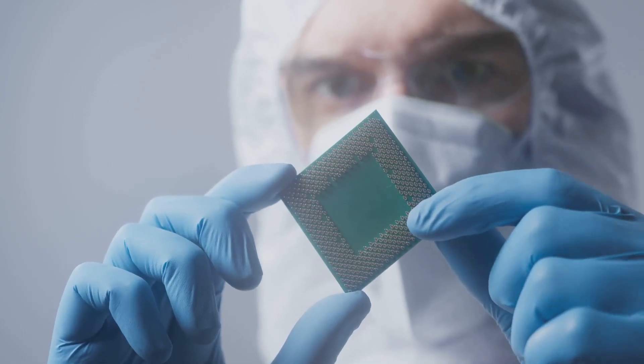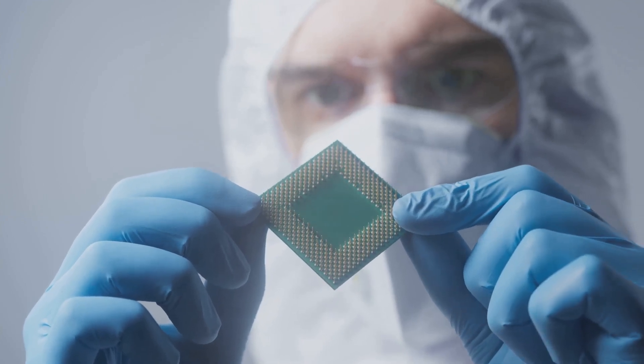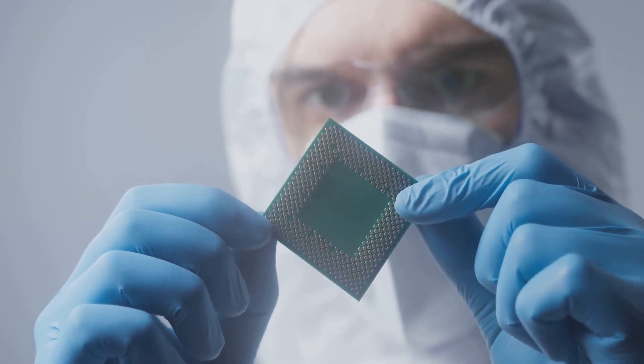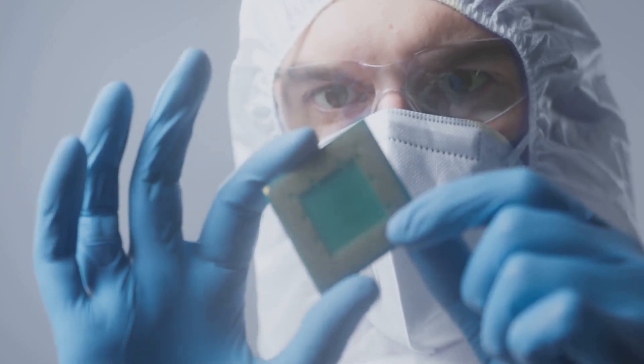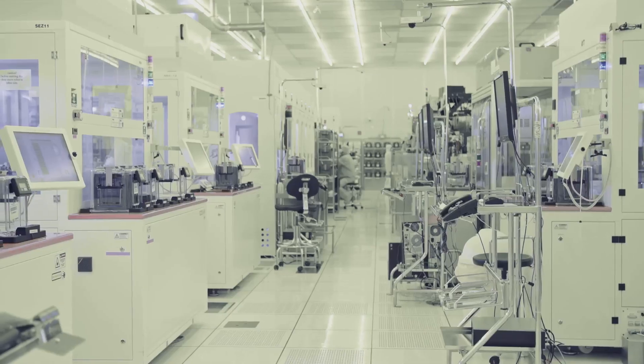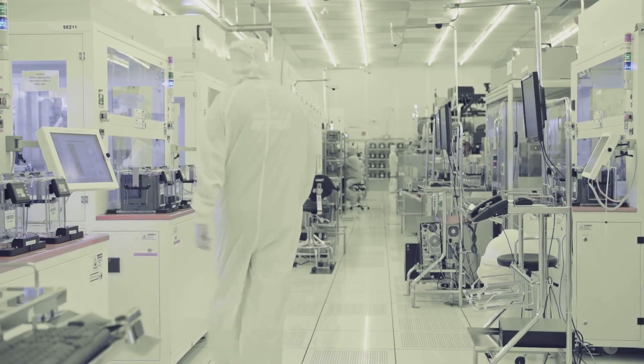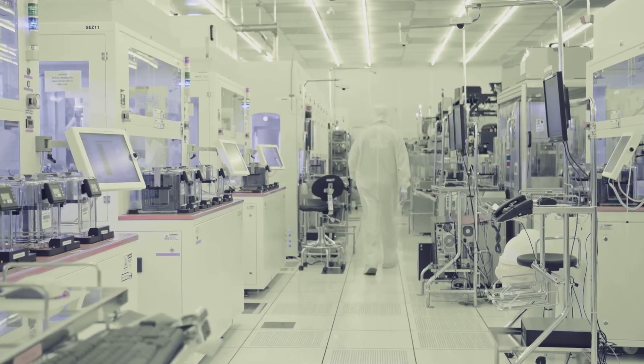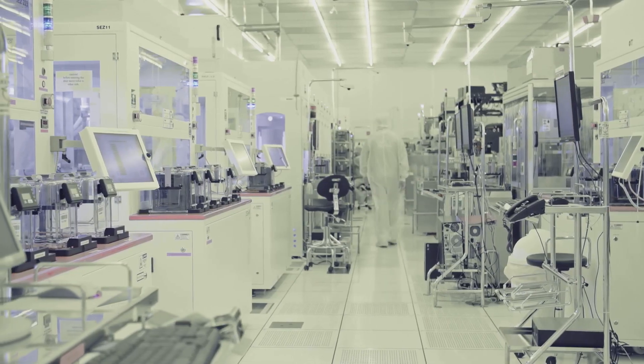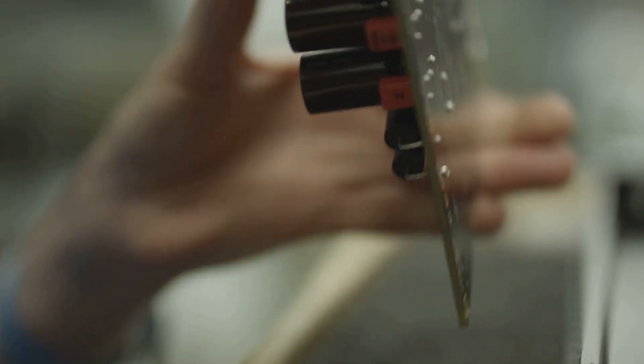They depend on tiny chips called semiconductors, packed with billions of transistors. These semiconductors are the unsung heroes of the digital age, enabling the functionality and performance of our most beloved devices. But have you ever wondered how these microscopic circuits are created? The process is a marvel of modern engineering, involving precision, innovation, and a touch of magic. It's a journey that starts with raw materials and ends with the powerful chips that drive our technology.